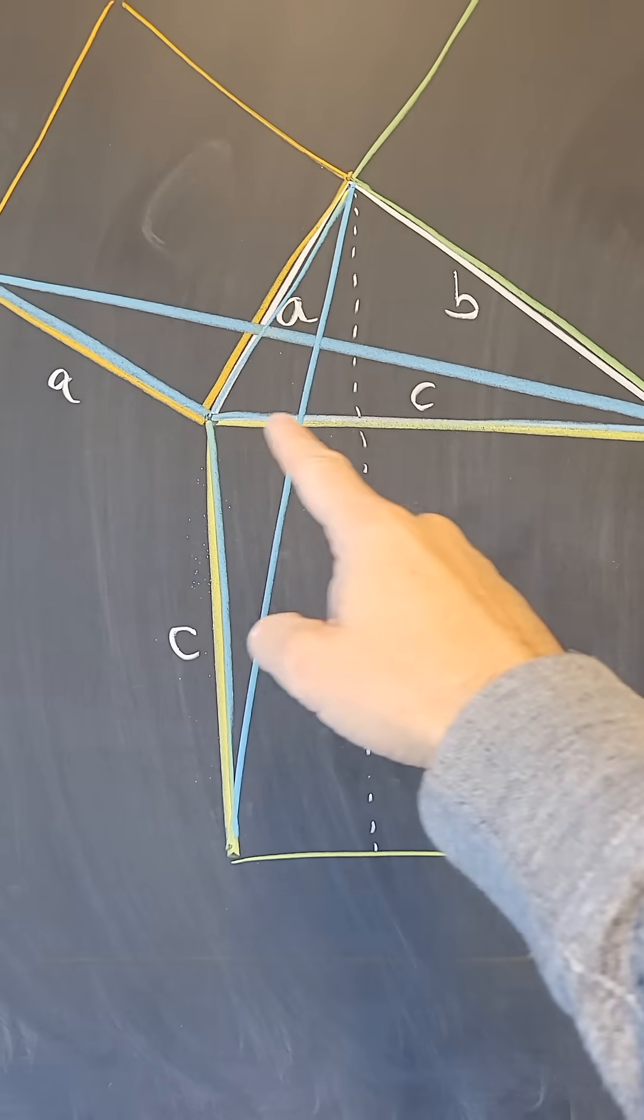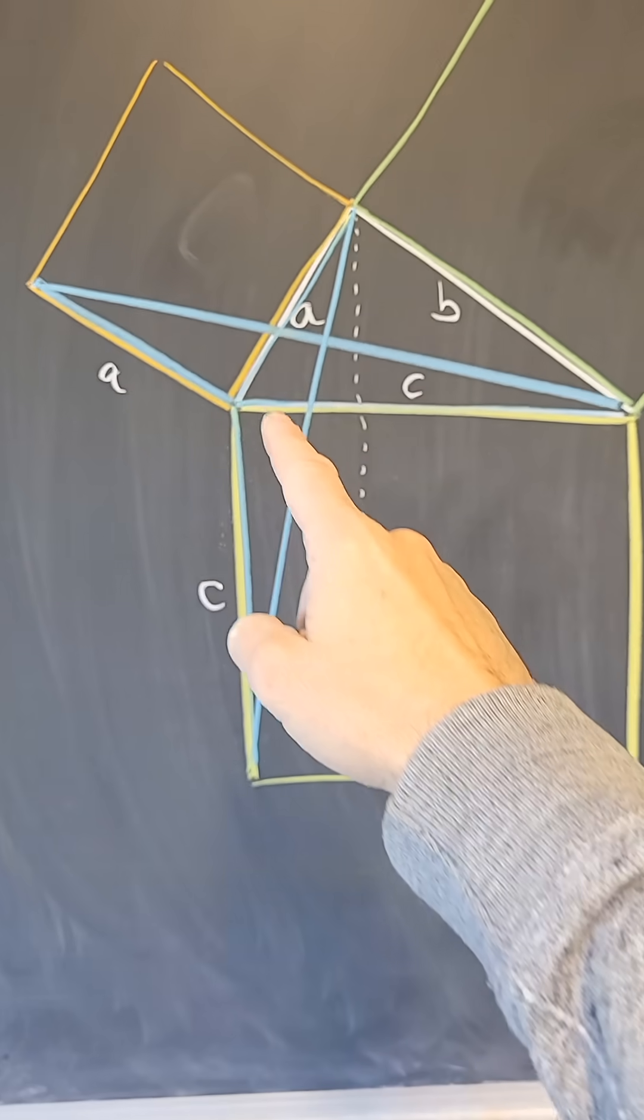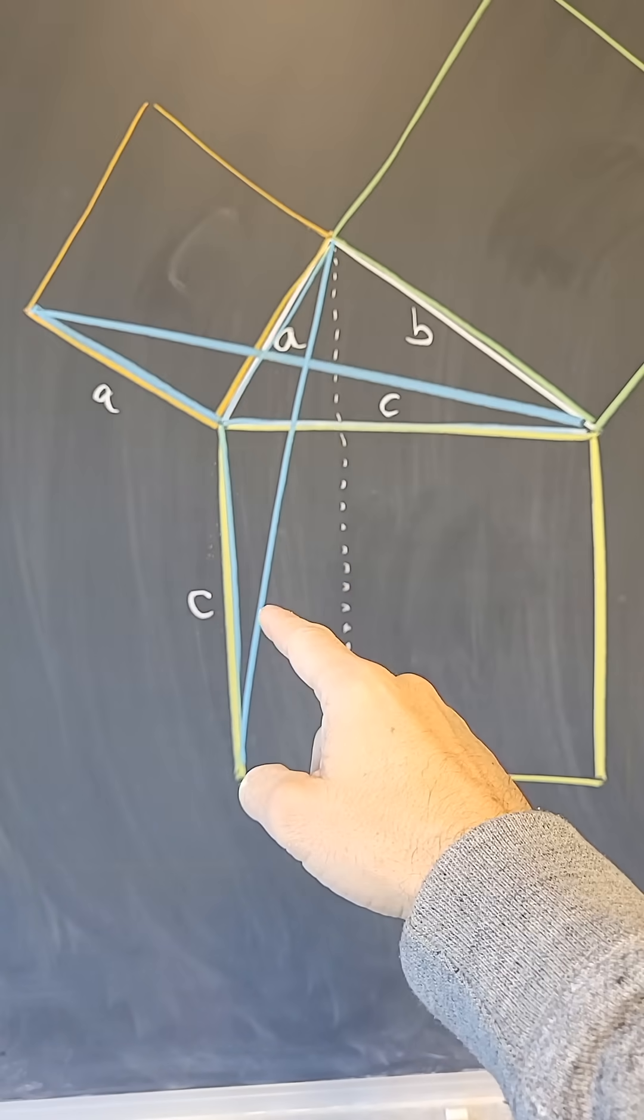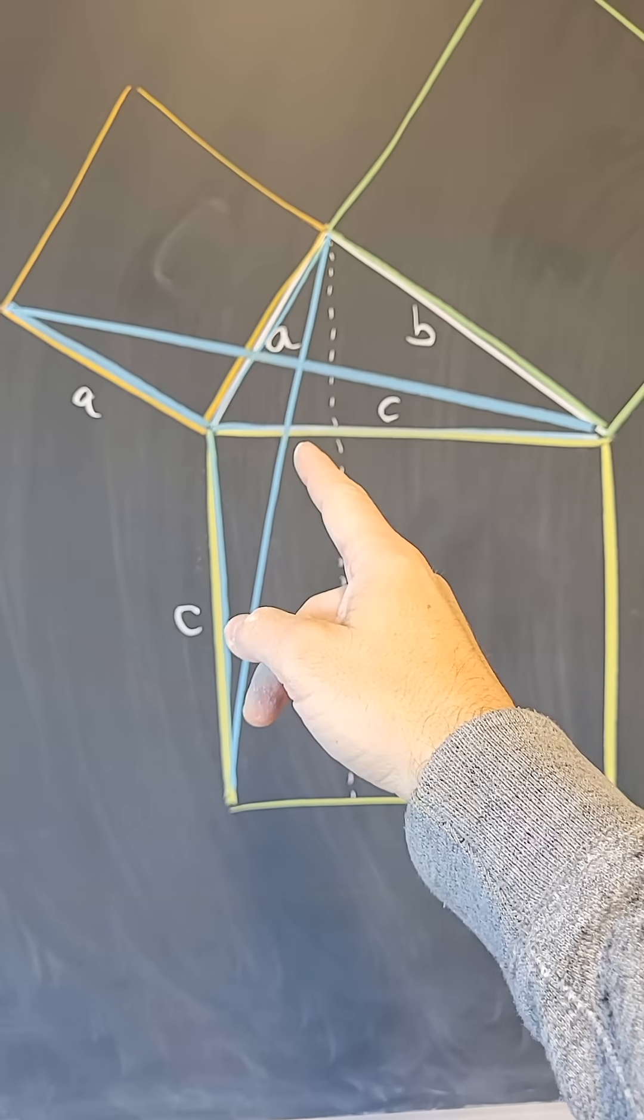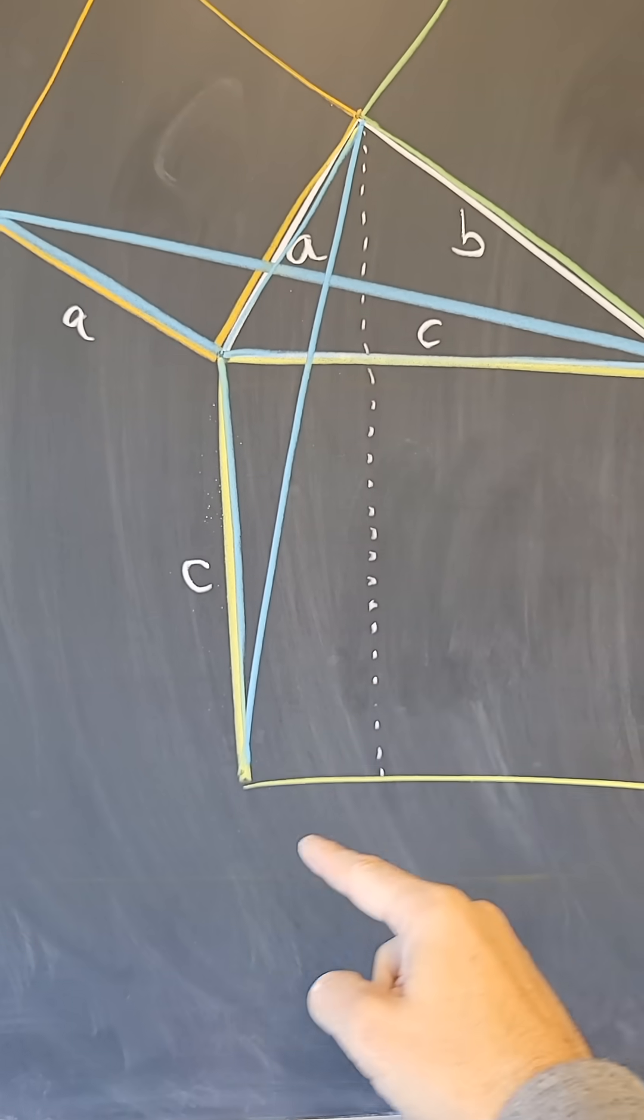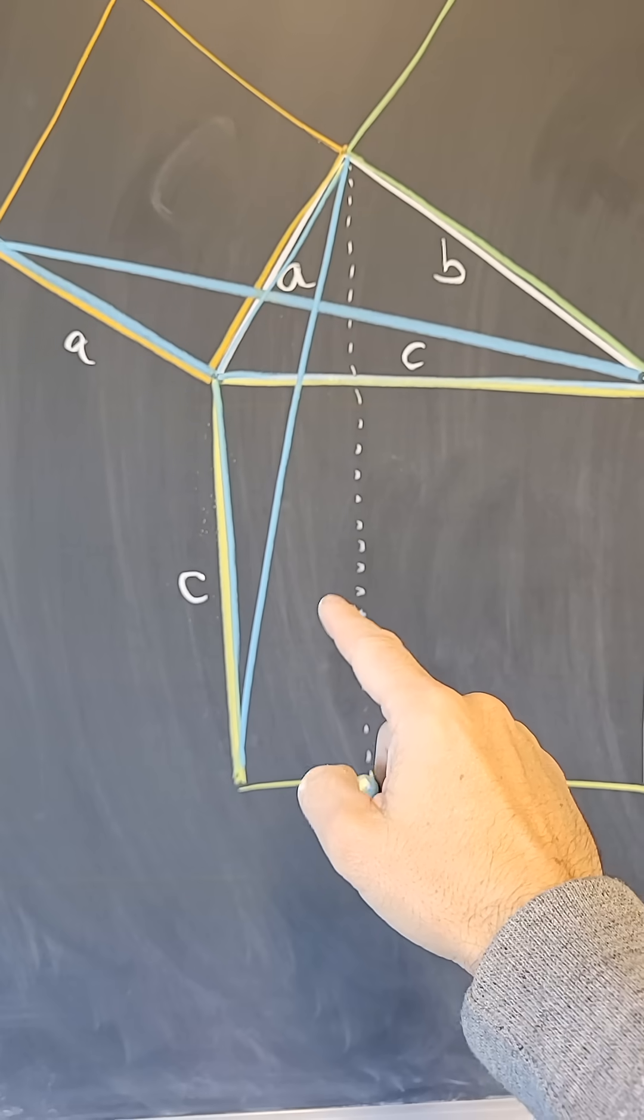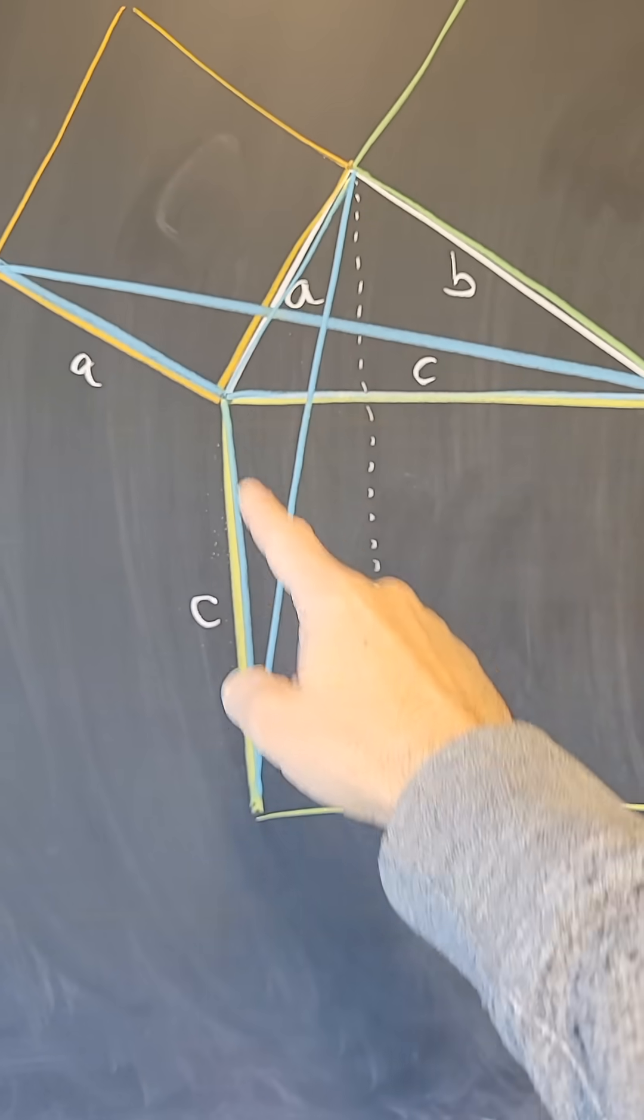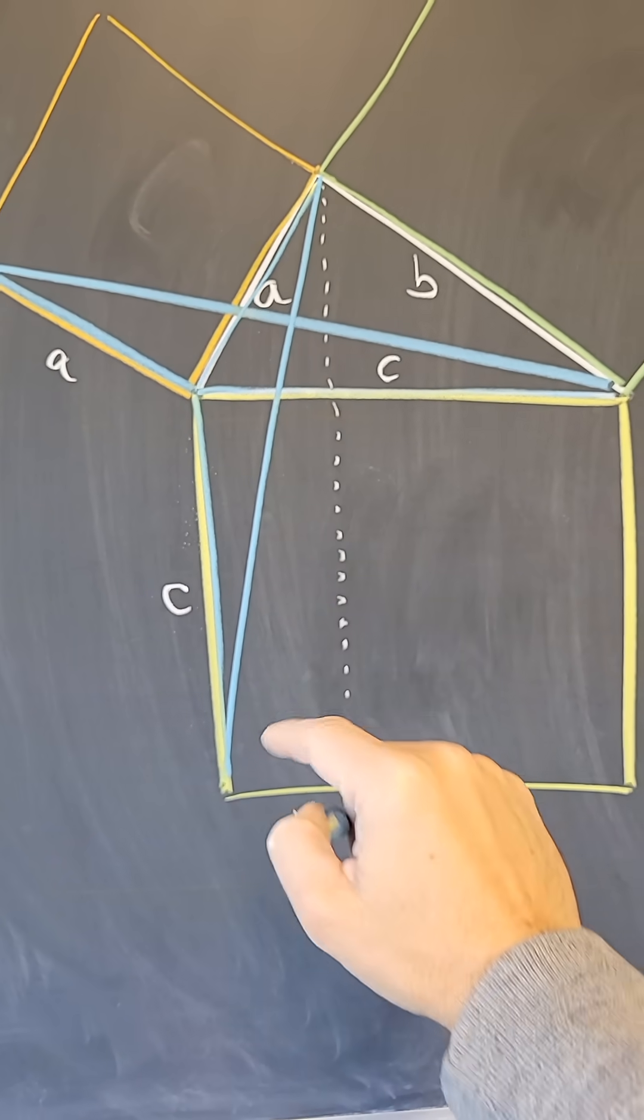or half of the area of this rectangle right here. But notice also that the two blue triangles can be shown to be congruent triangles. They're actually the same area. So this region right here actually has area A squared. So this rectangle here is A squared.